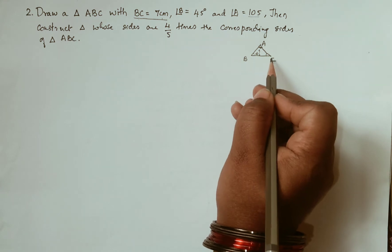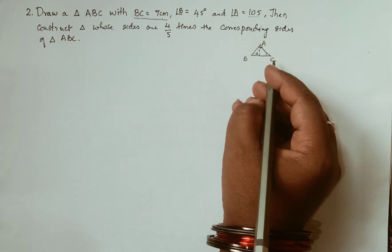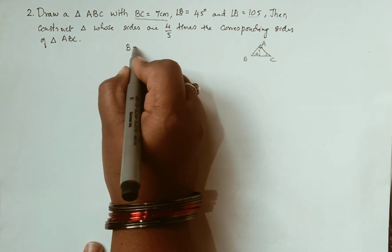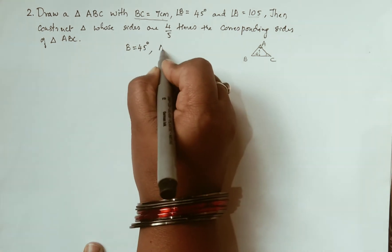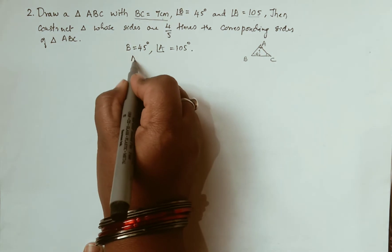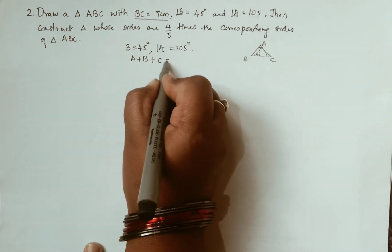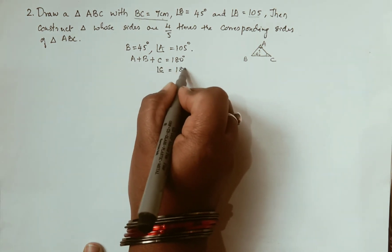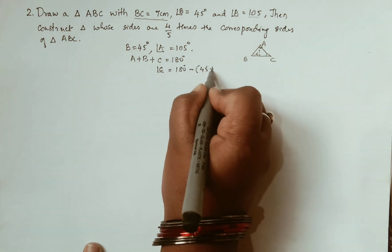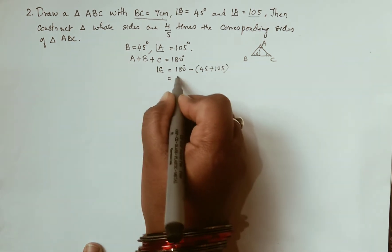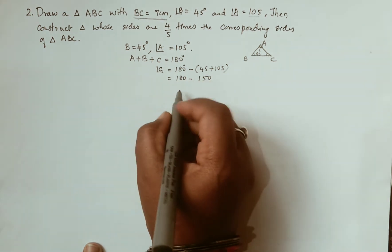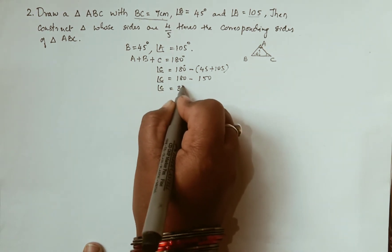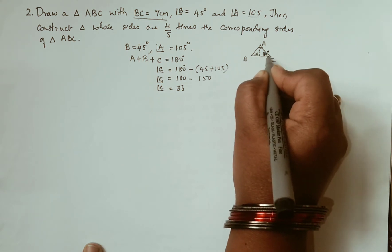Now we need to find out what angle C is. We can find angle C by using the angle sum property. We know that angle B is equal to 45° and angle A is equal to 105°. Angle A plus angle B plus angle C equals 180°. So angle C equals 180 minus (45 plus 105), which is 180 minus 150, giving angle C equal to 30°. Now we know the base angles: 45° at B and 30° at C.